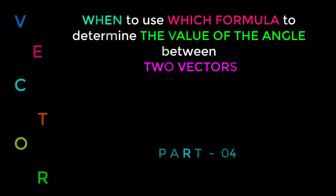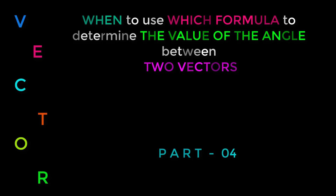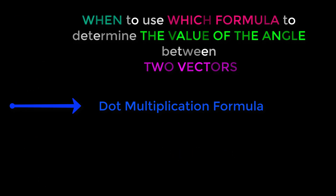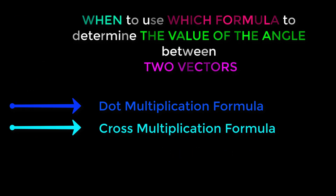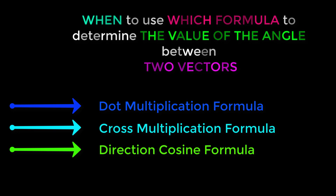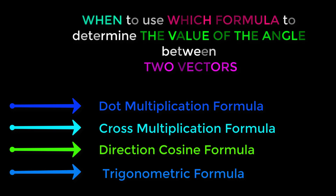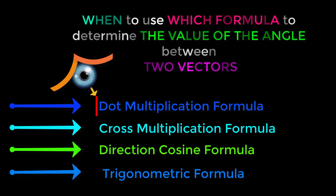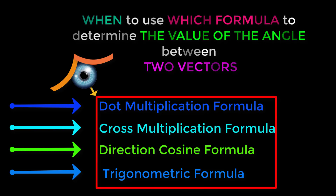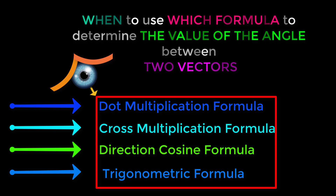Dear students, there are several formulas to determine the value of the angle between two vectors: the dot multiplication formula, cross multiplication formula, direction cosine formula, and trigonometric formula. Seeing these different formulas, many of us get confused about when to apply which formula. Don't worry — after watching this tutorial to the end, we will not have this problem anymore.